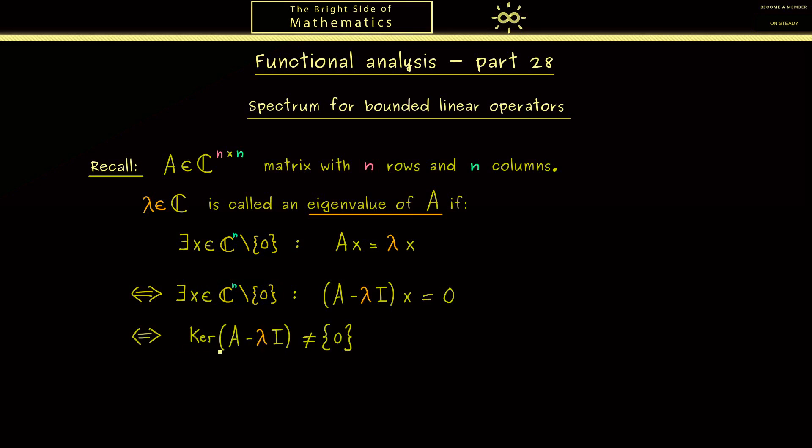However, this then means that the kernel of this matrix contains more than just the zero vector. Please recall, in the kernel we find all the vectors that are sent to zero. Of course we can also see this matrix as a map, so a map that sends a vector x to the vector (A - λI)x.